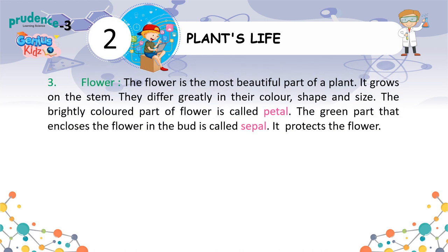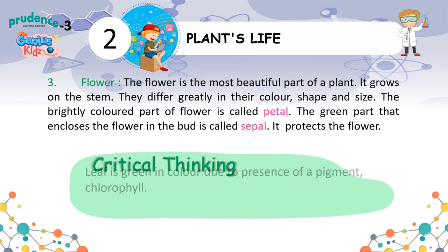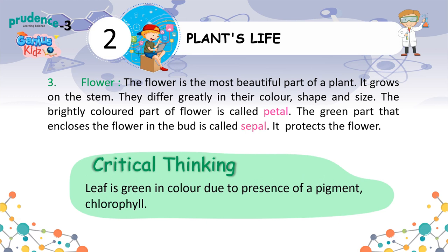Flower. The flower is the most beautiful part of a plant. It grows on the stem. Flowers differ greatly in their color, shape and size. The brightly colored part of a flower is called the petal. The green part that encloses the flower in the bud is called the sepal. It protects the flower. Critical Thinking: A leaf is green in color due to the presence of a pigment called chlorophyll.